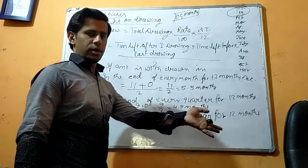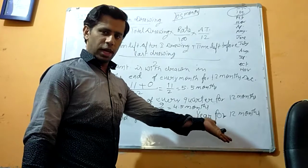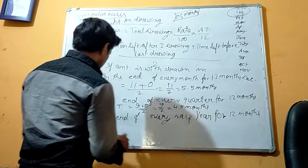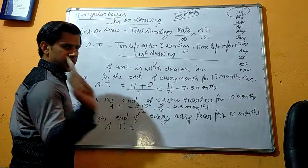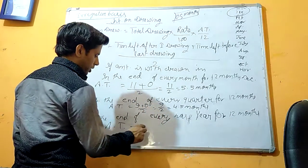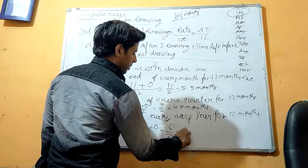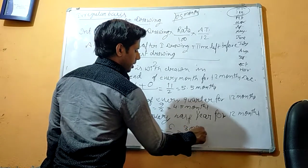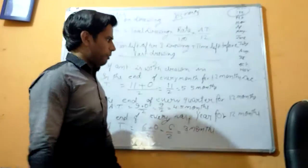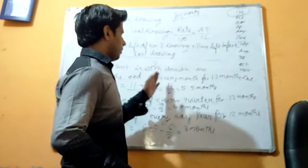For the end of every half year, we will subtract 6 months straight away. So 6 plus 0 divided by 2, that means 3 months. This is it, we have finished this topic.